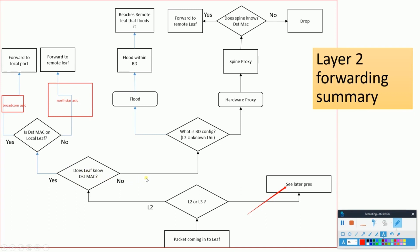Now, if the leaf does not know where the destination MAC is, under the bridge domain there is another setting called L2 Unknown Unicast. This setting has two options — it defines how L2 unknown unicast packets will be processed: either it will flood in the bridge domain, or it will be sent to the hardware proxy.